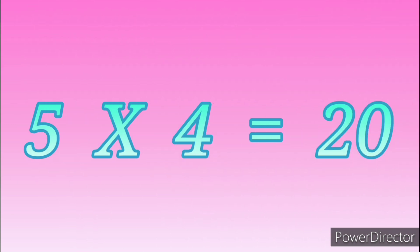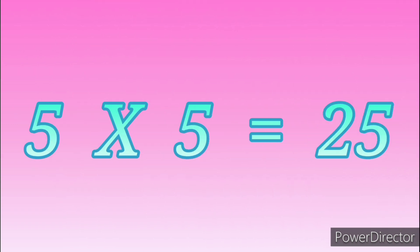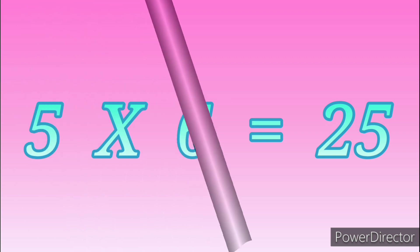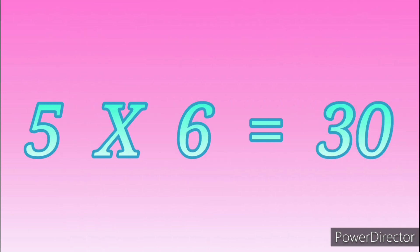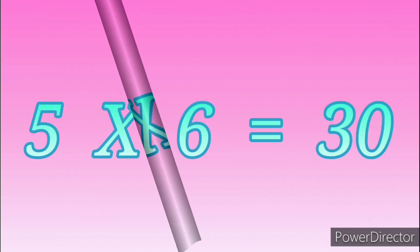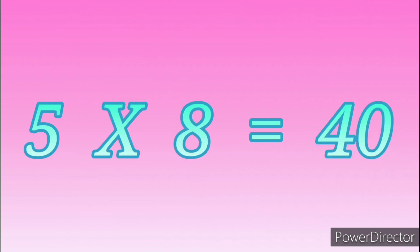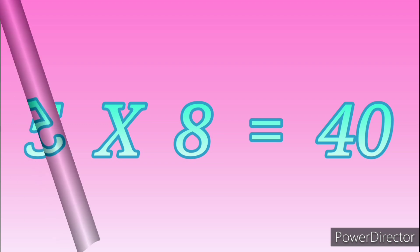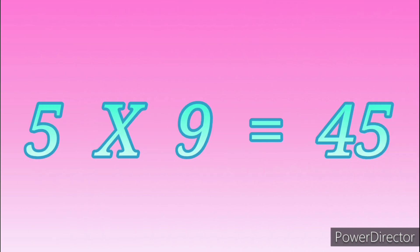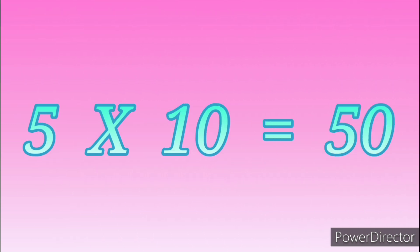Five-Four's are twenty. Five-Four's are twenty. Five-Five's are twenty-five. Five-Five's are twenty-five. Five-Six's are thirty. Five-Six's are thirty. Five-Seven's are thirty-five. Five-Seven's are thirty-five. Five-Eights are forty. Five-Nines are forty-five. Five-Tens are fifty.